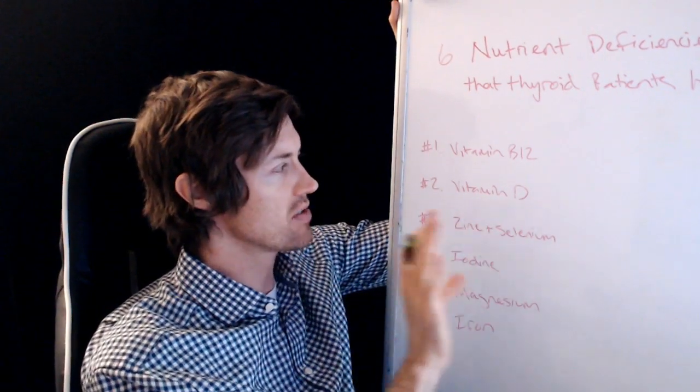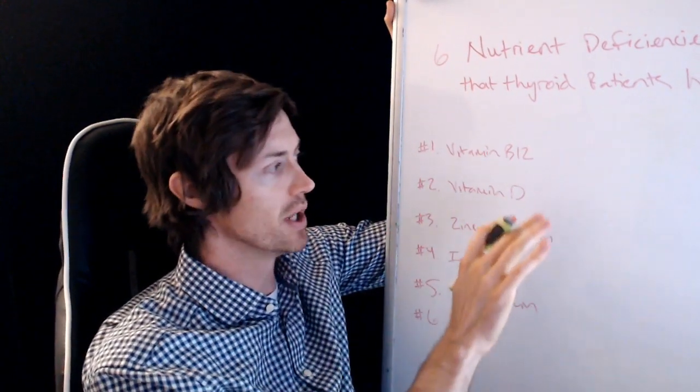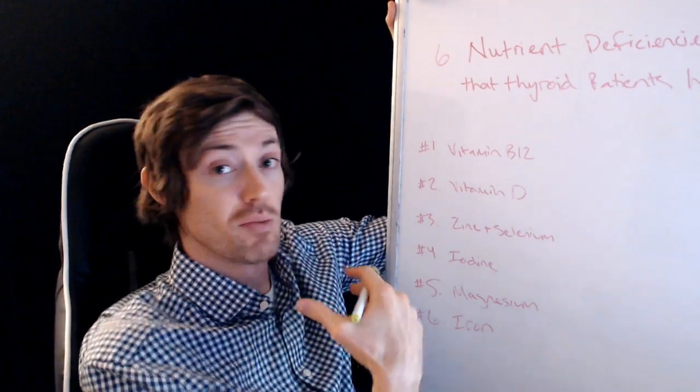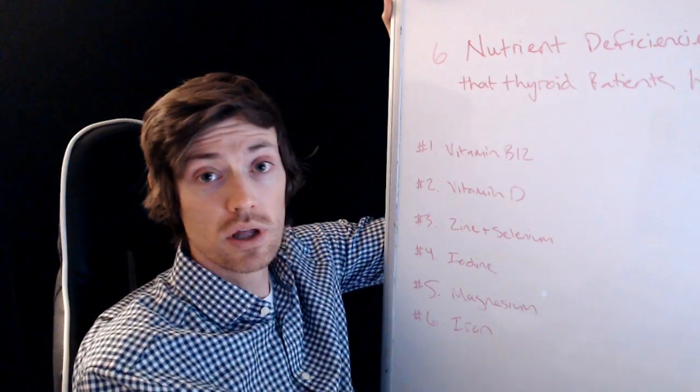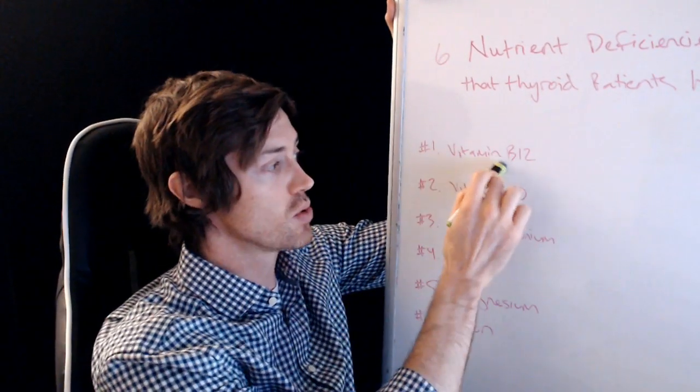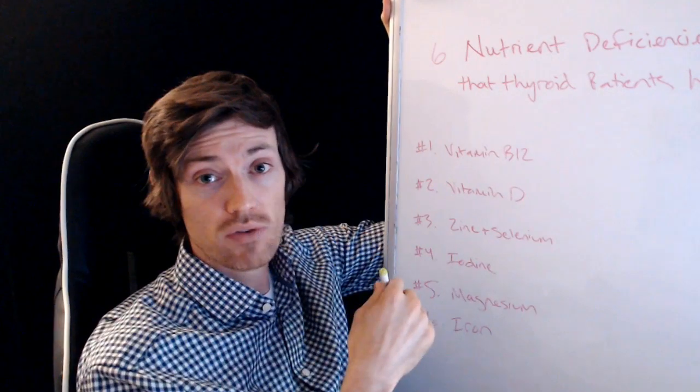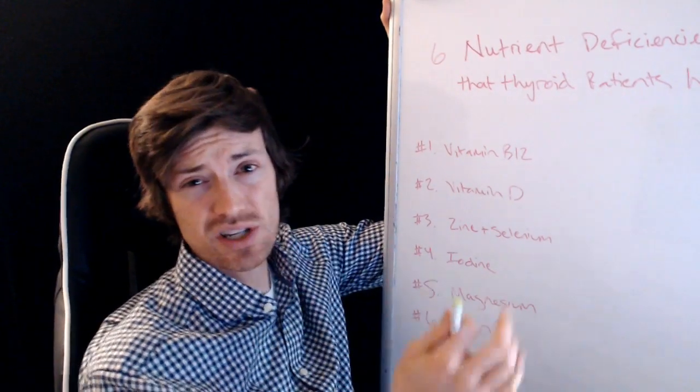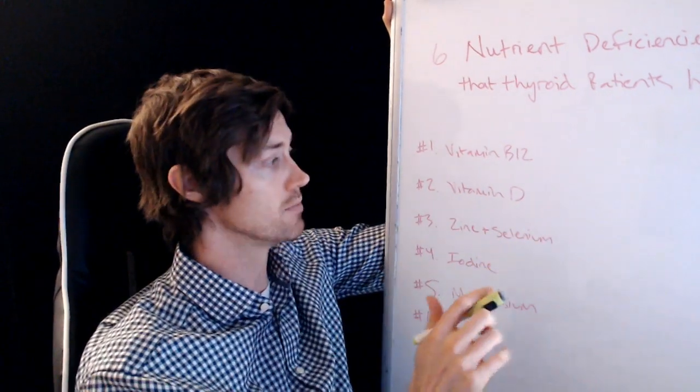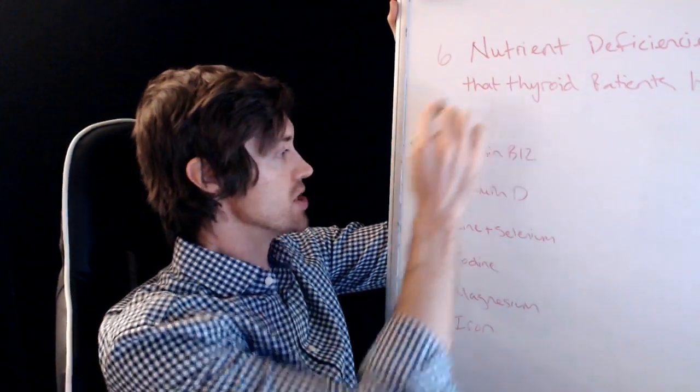Now again, there's other aspects of this. We'll have to do a video on just B12 itself, but if you're having issues with absorption, you might benefit from taking a shot. You might benefit from sublingual B12 versus oral encapsulations. So there's other aspects of it, but B12 is very, very important. And if that B12 is low, you're going to have low energy, you might have worsening brain fog, et cetera. So very, very important B12 if you have any sort of thyroid problem.